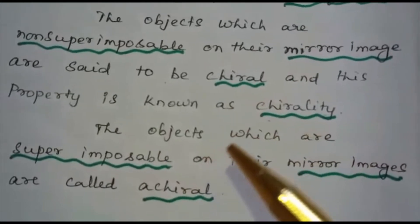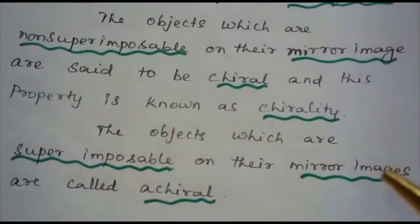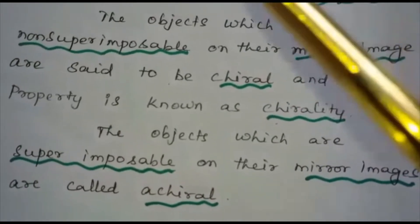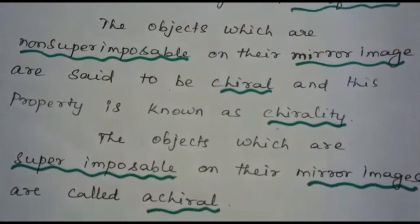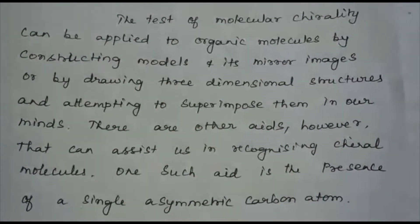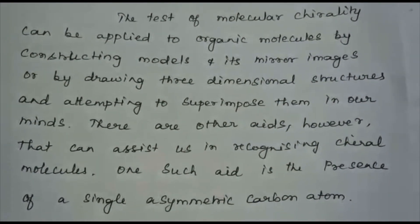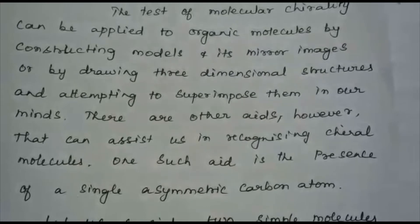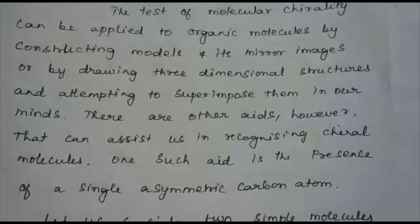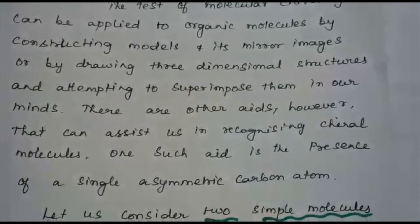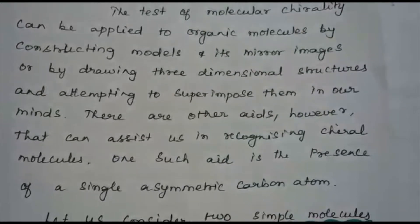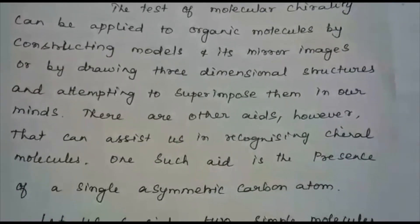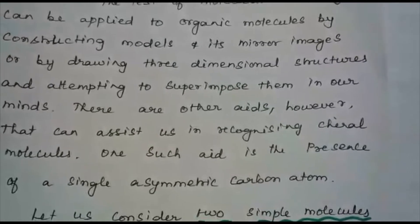Objects that are superimposable on their mirror images are called achiral, while objects that are non-superimposable on their mirror images are said to be chiral. The test of molecular chirality can be applied to organic molecules by constructing models and their mirror images, or by drawing three-dimensional structures and attempting to superimpose them. One useful aid in recognizing chiral molecules is the presence of a single asymmetric carbon atom.